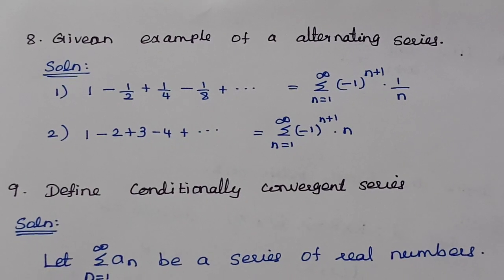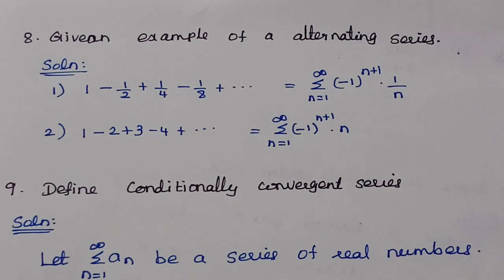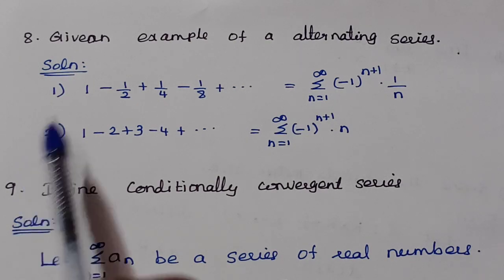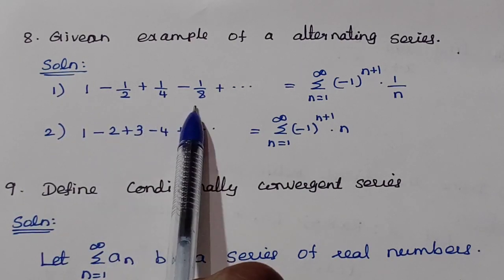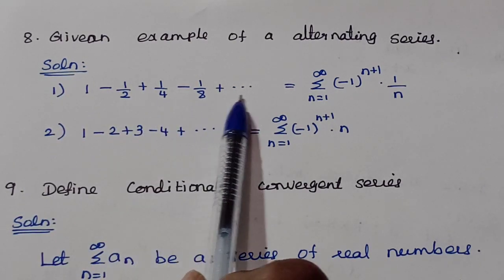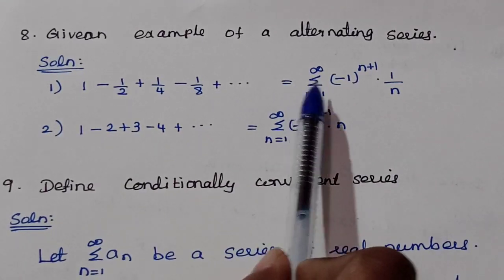Give an example of an alternating series. An alternating series has terms that are alternately positive and negative. For example: 1 − 1/2 + 1/4 − 1/8 + … In this series odd terms are positive and even terms are negative.